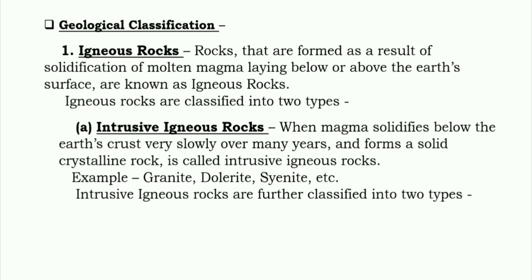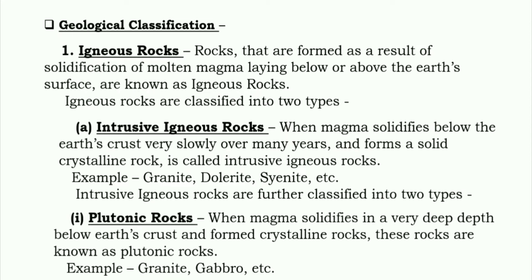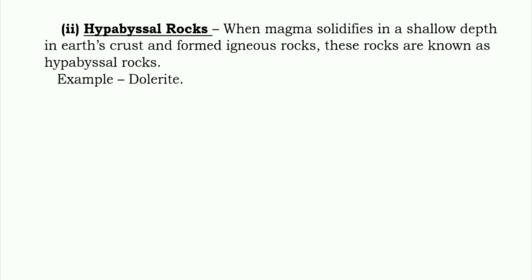Intrusive igneous rocks are further classified into two types. First is plutonic rocks: when magma solidifies at a very deep depth below earth's crust and forms crystalline rocks, these rocks are known as plutonic rocks. Examples: granite, gabbro, etc. Second is hypabyssal rocks: when magma solidifies at a shallow depth in earth's crust and forms igneous rocks, these rocks are known as hypabyssal rocks. Example: dolerite.